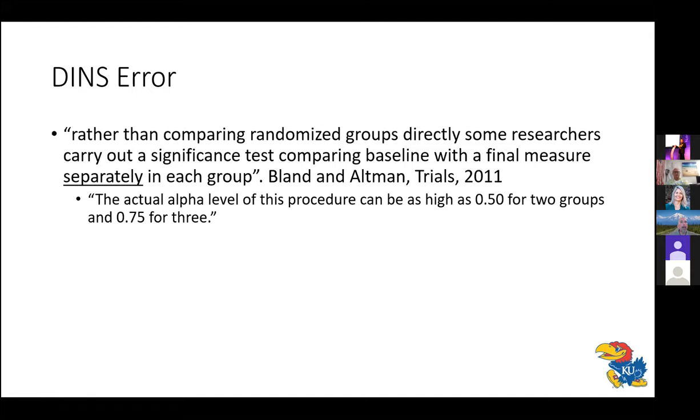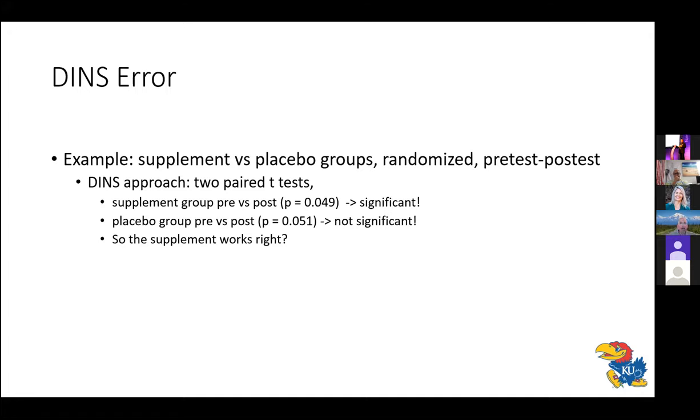But the idea of the DIN's error is this, rather than comparing randomized groups directly, some researchers carry out a significance test comparing baseline with the final measure separately in each group. And the statistical implication of this is that you can grossly inflate your type one error rate. So you may set your alpha at 0.05, but depending on the conditions, your actual alpha can be as high as 0.5 or even 0.75. All right. So a little bit of an example of this conceptual model. So let's have a fairly standard design here. So we're going to randomize subjects to either get a supplement or a placebo.